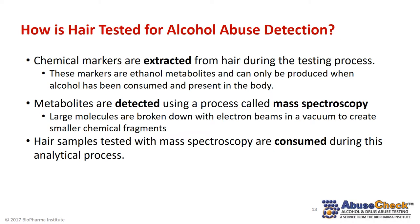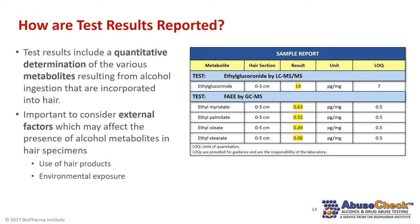Let's talk about the lab testing process. The metabolites of ethanol in the body that are taken up by hair are extracted from hair samples during the testing process. The extracts are analyzed using a process called mass spectroscopy. Large molecules are broken down with electron beams in a vacuum to create smaller chemical fragments, and it is these smaller chemical fragments that can be detected and quantified. Test results are quantitative and reported in units of picograms per milligram. It is important to consider external factors which may affect the presence of alcohol metabolites in hair specimens, including use of certain hair products and environmental exposure.